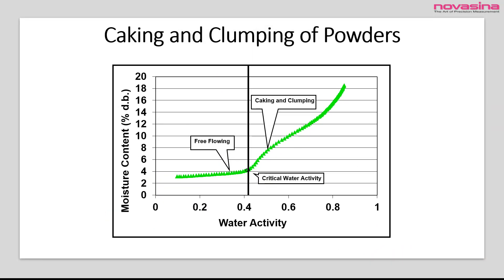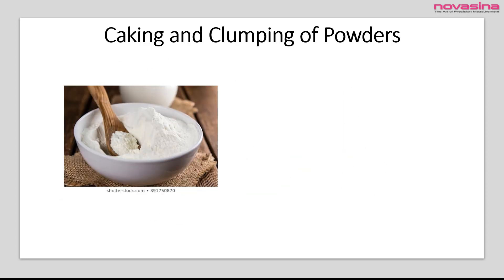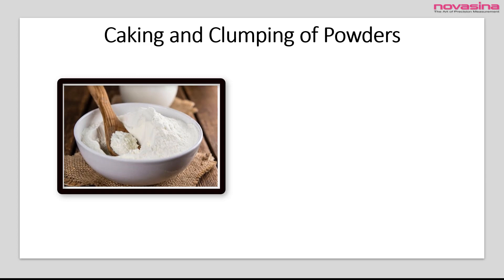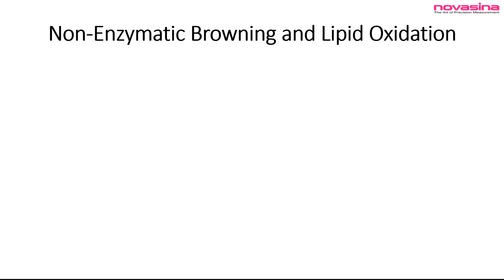Did you know that you can control the caking and clumping of powders using water activity? There is a unique critical water activity for each powder where caking and clumping will start. At water activities less than this critical value, the powders will stay free-flowing, but at water activities higher than this value, the powders will get sticky, resulting in caking and clumping. This critical water activity decreases with an increase in storage temperature and has a strong association with glass transition.